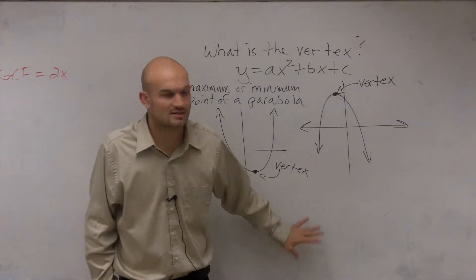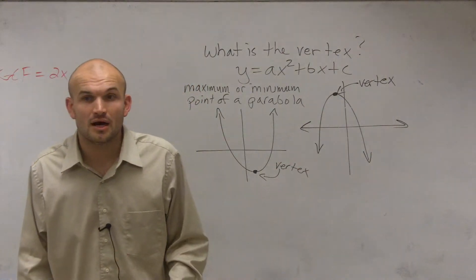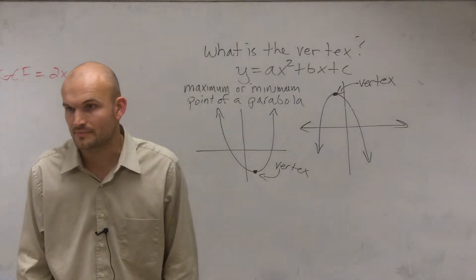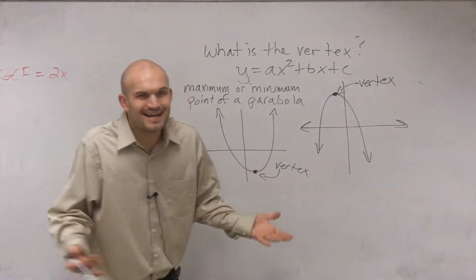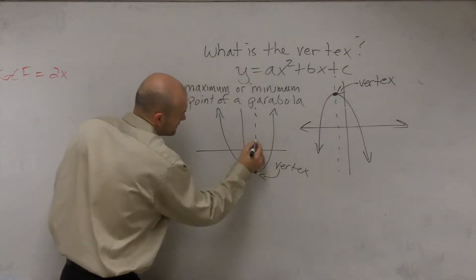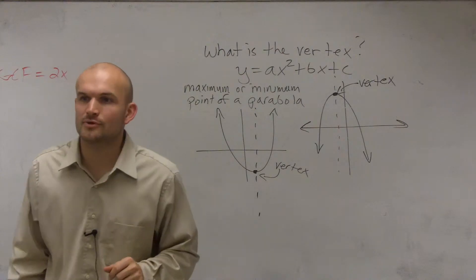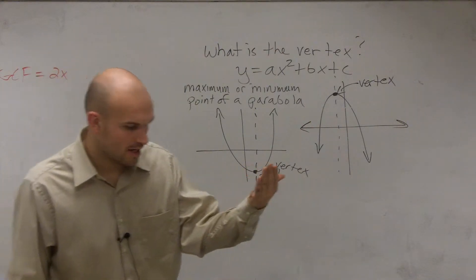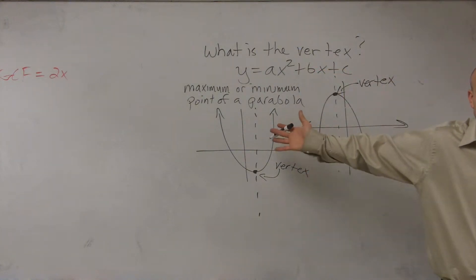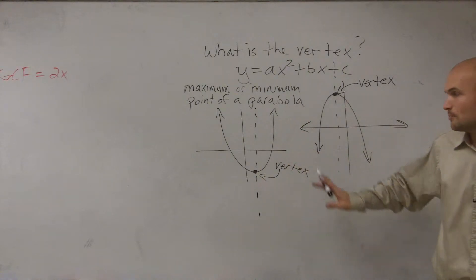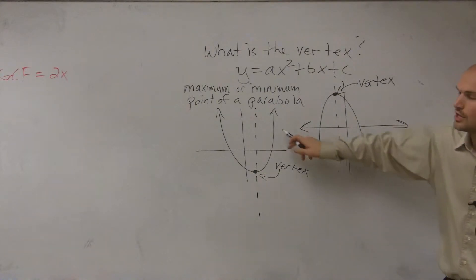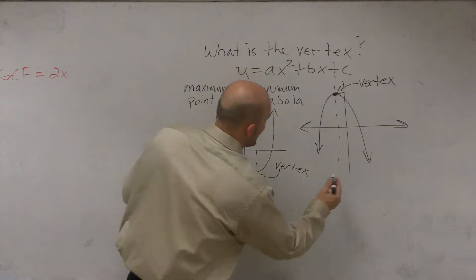Does everybody have written down the vertex? Now let's talk about how we're going to find it. I showed you guys how to find the axis of symmetry. What exactly is the axis of symmetry? If you guys remember, we did a lot of this work in geometry. If I put a dotted line through a parabola going straight through it, is that going to be a line of reflection that you could reflect your parabola? That dotted line is what we call the axis of symmetry.